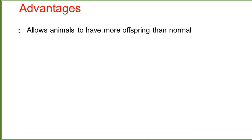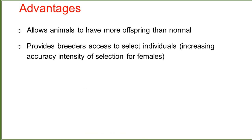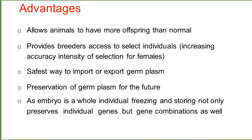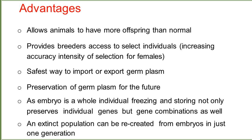The advantages of these technologies include allowing animals to have more offspring than normal. They provide breeders access to select individuals, increasing the accuracy and intensity of selection for females. They offer a fast way to import or export germ plasm, and preserve germ plasm for the future. Because an embryo is a whole individual, freezing and storing it preserves not only individual genes but gene combinations as well. An extinct population can be recreated from embryos in just one generation.